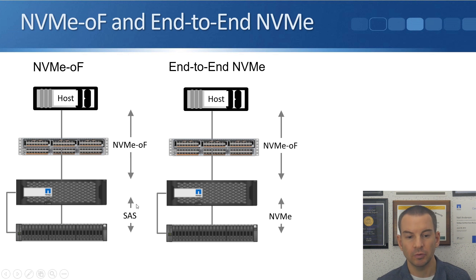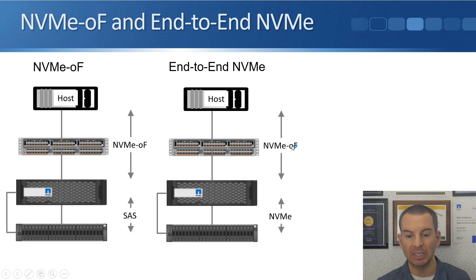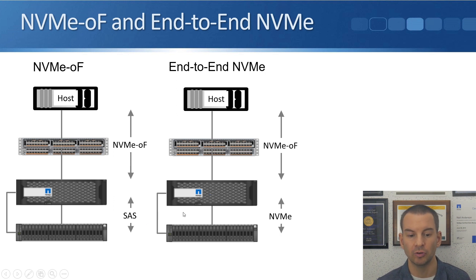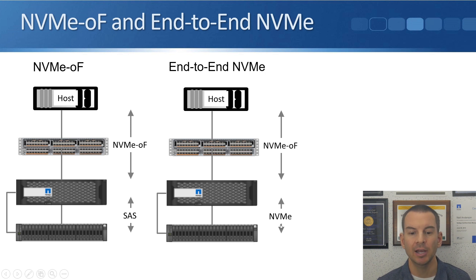The other thing we can do in ONTAP is end-to-end NVMe. With end-to-end NVMe, again we're using NVMe over fabrics over the network from the host to the storage system. But in this case, the disk subsystem is also using NVMe. So rather than a SAS connection from the controller to the disks, we've got an NVMe connection there, and that gives you the best performance with end-to-end NVMe.